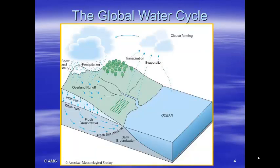Our global water cycle involves evaporation over oceans, lakes, and streams, and transpiration — water that moves up through a plant's roots onto its leaves and enters the atmosphere. Clouds form, and under the right conditions precipitation in the forms of rain, snow, hail, and sleet falls back onto the land. Some of this water heads back towards the ocean as runoff.